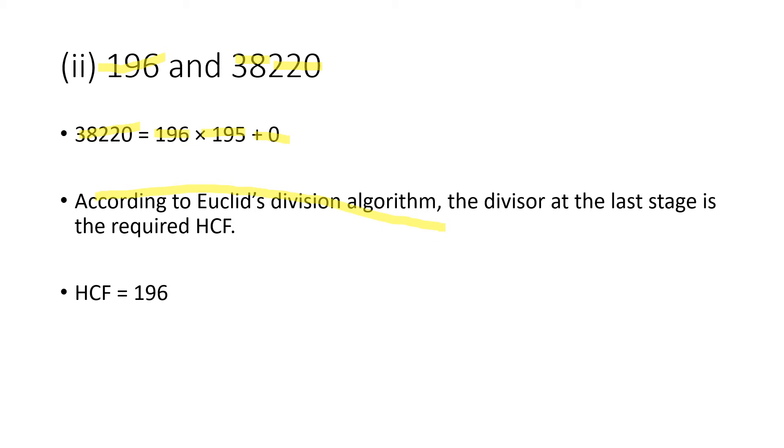According to Euclid's division algorithm, the divisor at the last step is the required HCF. So the HCF is 196.